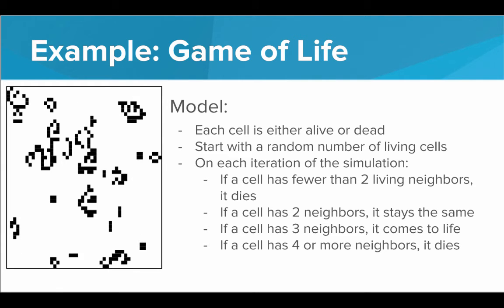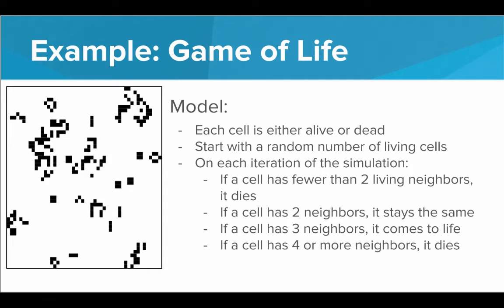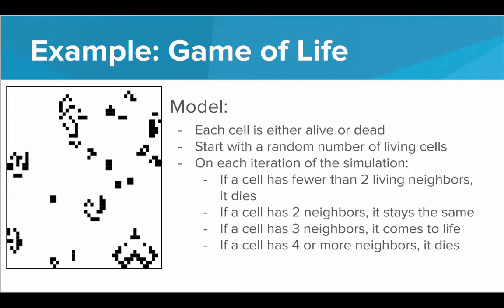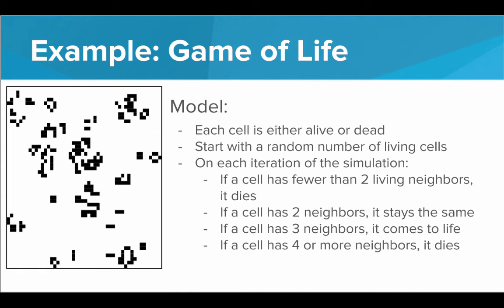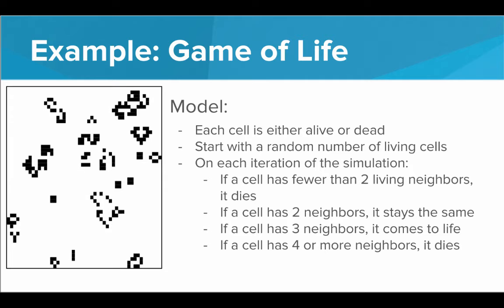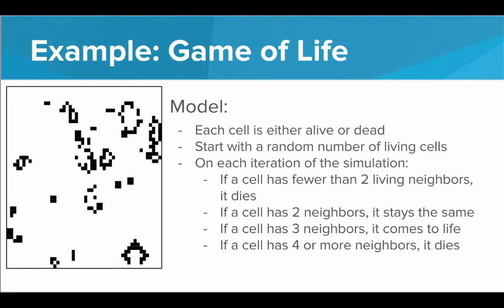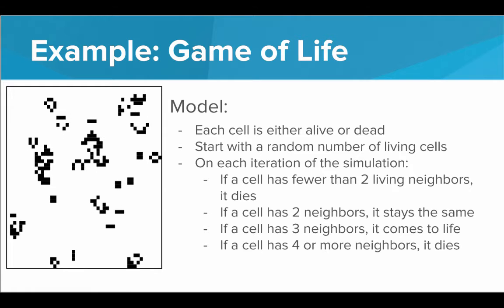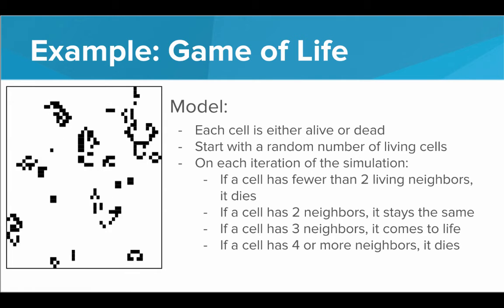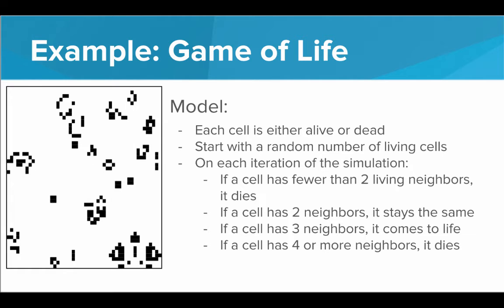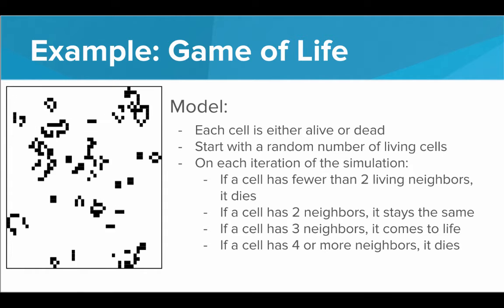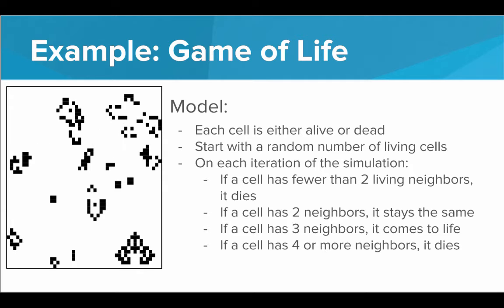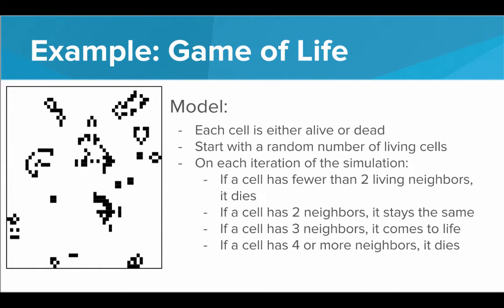Here's the model for the game of life. The model is we have a grid of cells and each cell is either alive or dead. It's on or off. To start off with in this grid, we will have a random number of living cells just randomly distributed through the grid. On each iteration of the simulation, at each new moment in the simulation, cells will live and die according to the following rules. We look at each cell and count its neighbors. If a cell has fewer than two living neighbors, then it dies. There's not enough living cells around it to sustain itself. If a cell has exactly two neighbors, then it stays the same. If it was dead, it stays dead. If it was alive, then it stays alive.